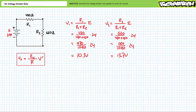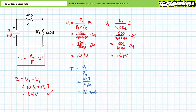Given we save so much time using the voltage divider rule, we have ample opportunity to check our work. There are two principal means of doing so: one via Kirchhoff's voltage law and the other via Ohm's law. Kirchhoff's voltage law states that for any closed loop, the sum of voltage rises equals the sum of voltage drops — E equals V1 plus V2. Does 10.3 plus 13.7 equal 24 volts? Yes. Additionally, Ohm's law confirms both R1 and R2 each experience 22 milliamps — confirming the series circuit property that current through elements in series is the same.